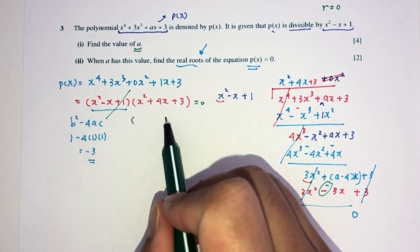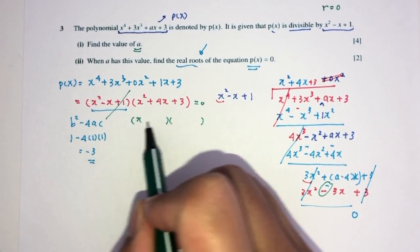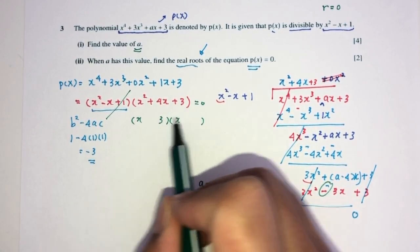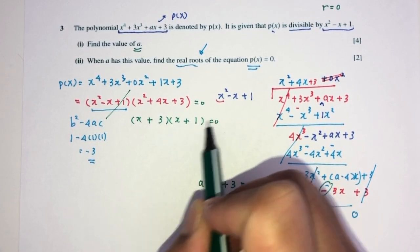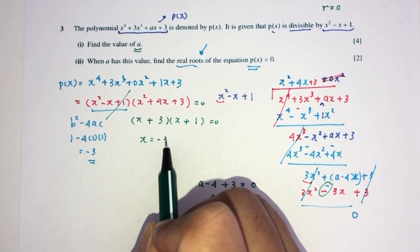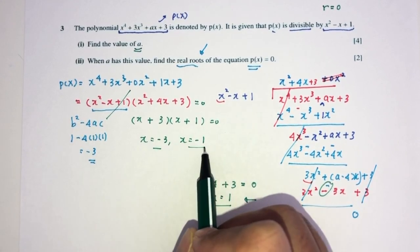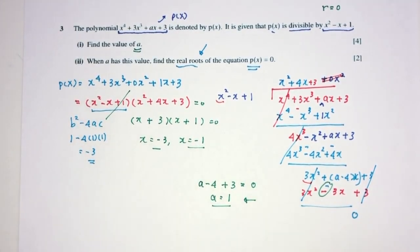Now, can we factorize? Yes. I can see this right away. That will be x times x. 3 is 3 times 1. To get plus 4, we have to have plus and plus. So, x will be the value of minus 3 and minus 1 for the real roots of this equation. And this is your question number 3.